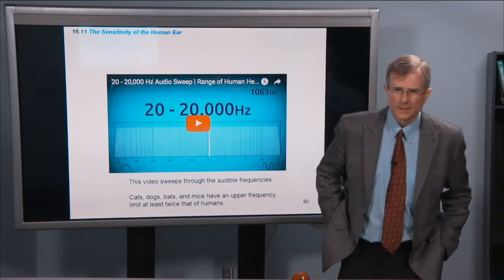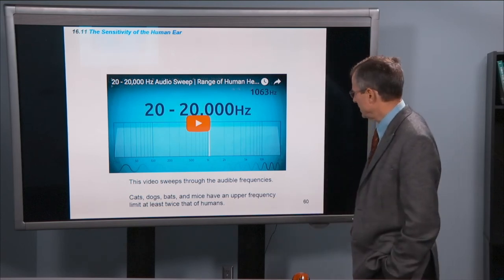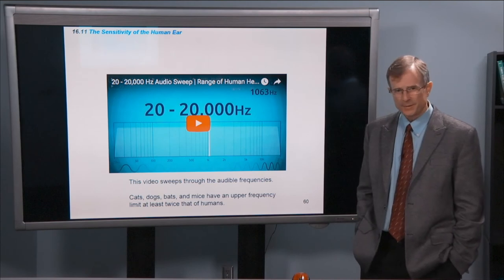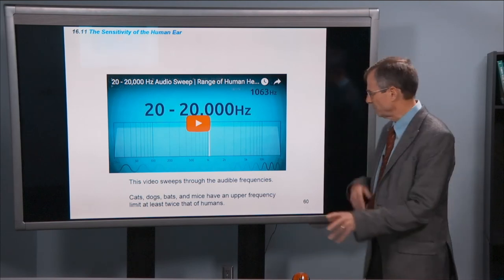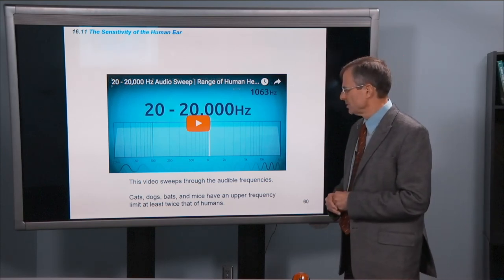Dogs, cats, bats, and mice all have upper frequency limits that's at least twice that of humans. 40,000, 50,000, 60,000, 70,000 hertz depending on which of these animals that you're talking about and which particular species of those animals.